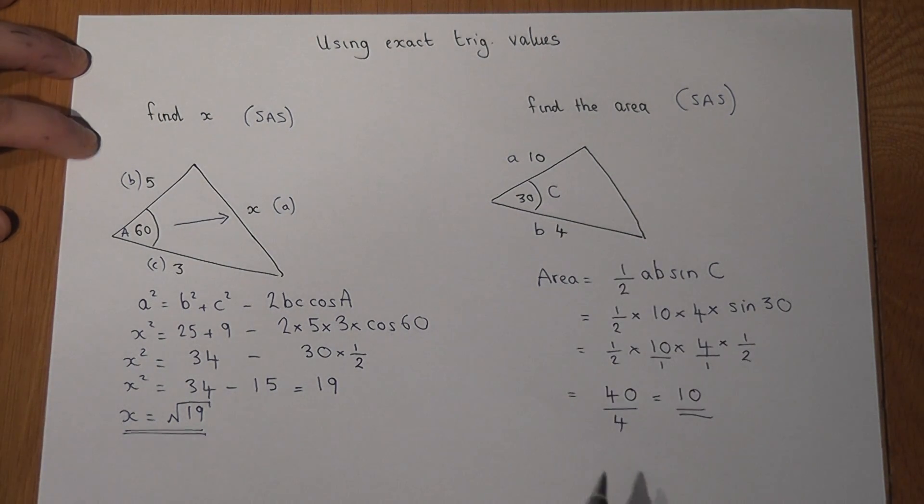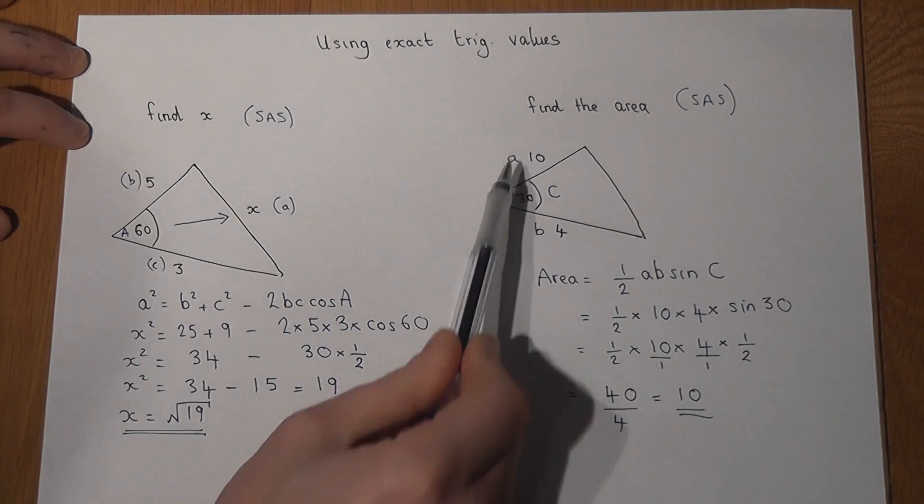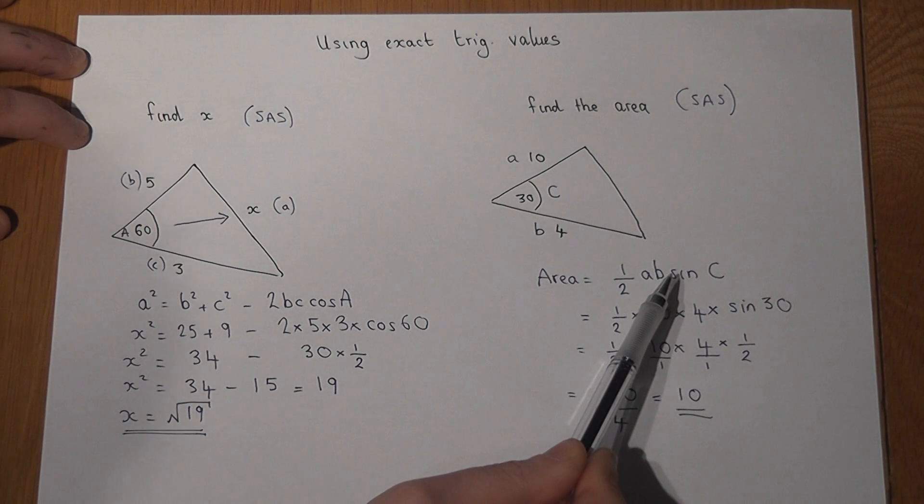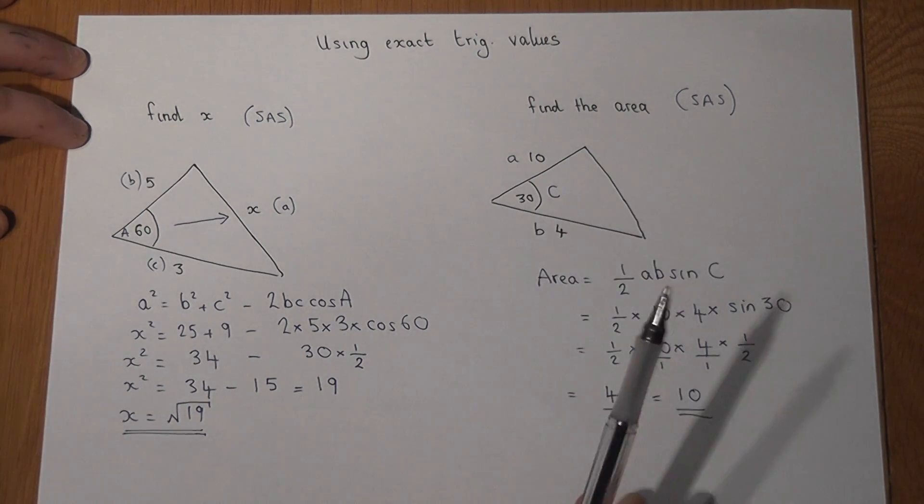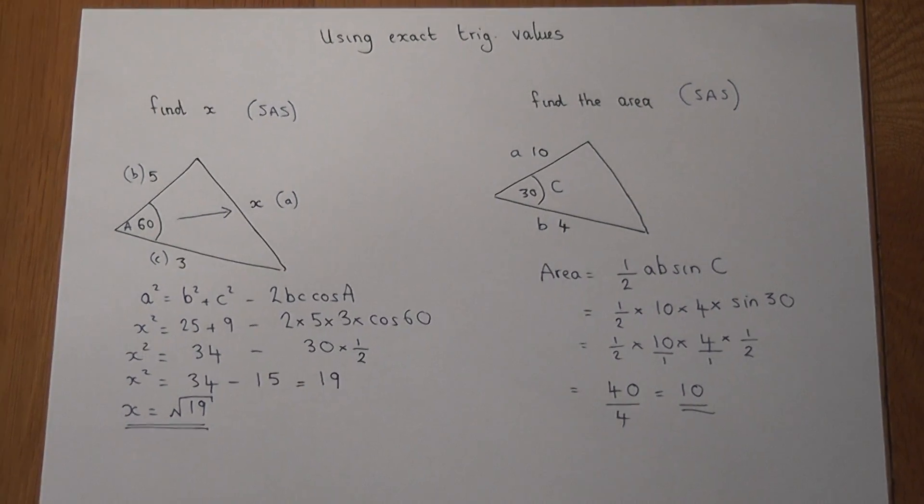And again, all we do is we do a half lots of the two sides times together times by sine, in this case, of the enclosed angle.